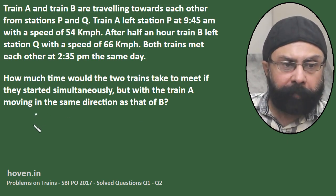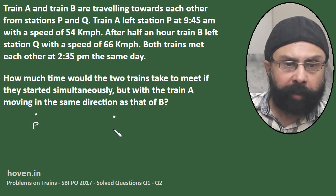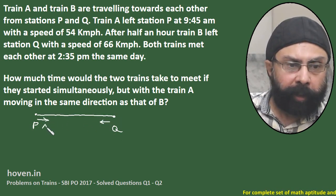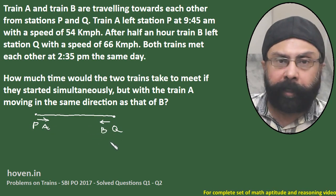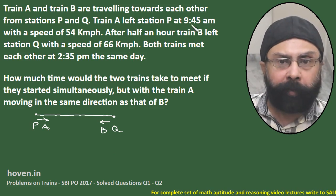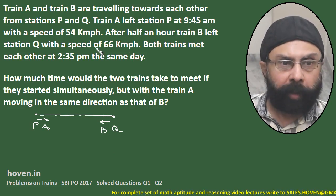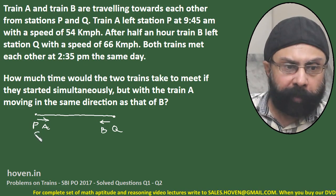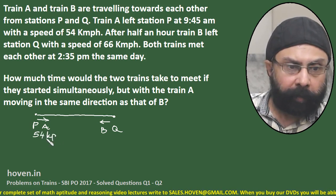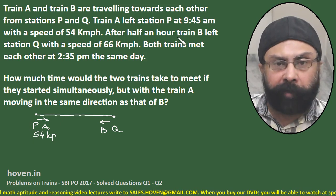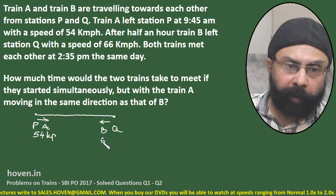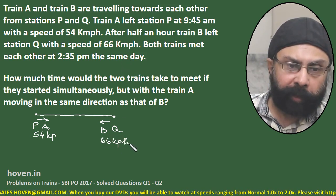We can draw a diagram. This is station P and this is station Q. They are travelling towards each other — train A is coming from P and train B from Q. Train A left P at 9:45 AM with a speed of 54 kph. After half an hour, train B left station Q with a speed of 66 kph.